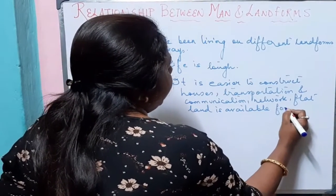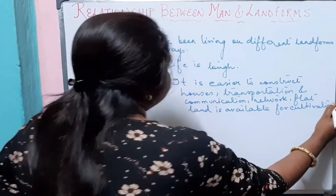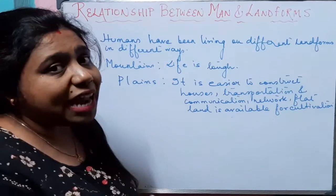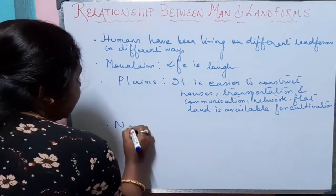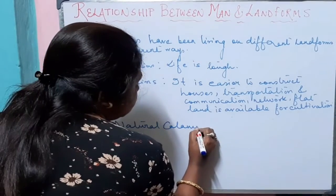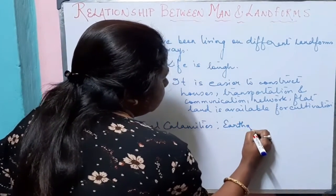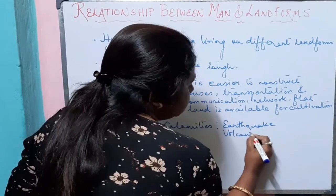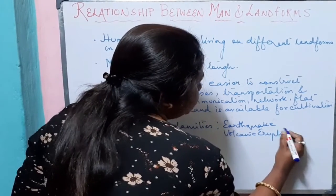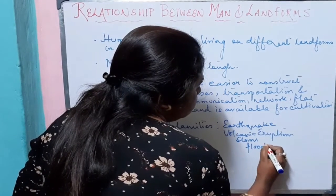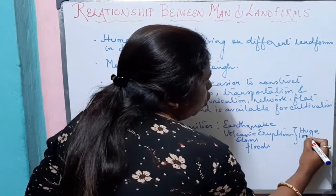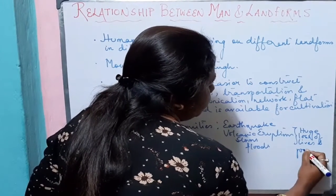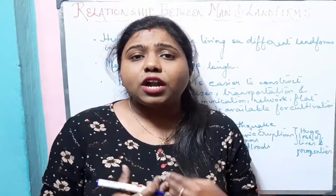It is quite easier to live in plains compared to mountains. Humans living on different landforms also have to face natural calamities like earthquakes, volcanic eruptions, storms, and floods, which lead to huge loss of lives and properties. So we can say that there is a relationship between man and landforms. Landforms are the gifts of nature and they are priceless. Yet what we are doing is exploiting and misusing the landforms.